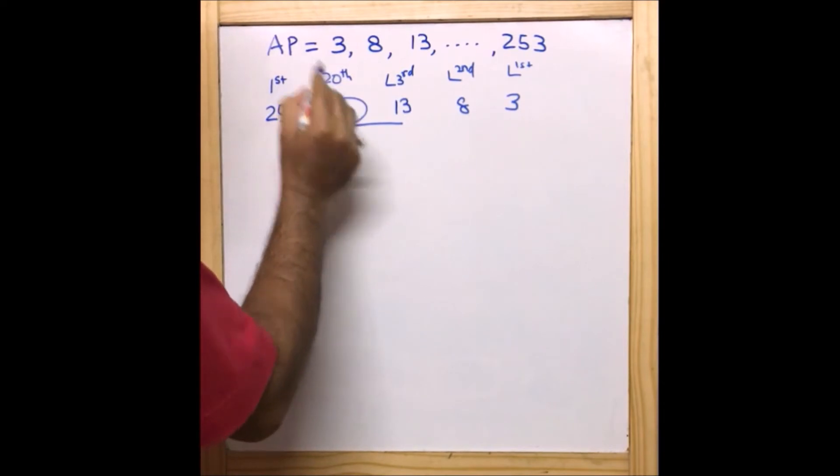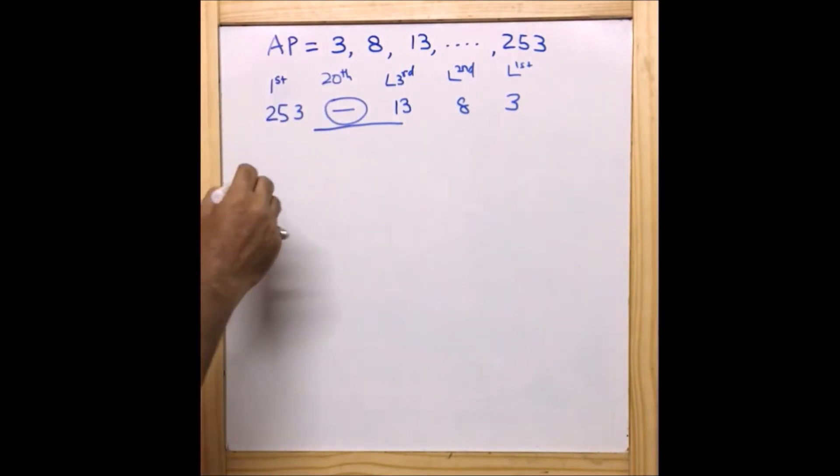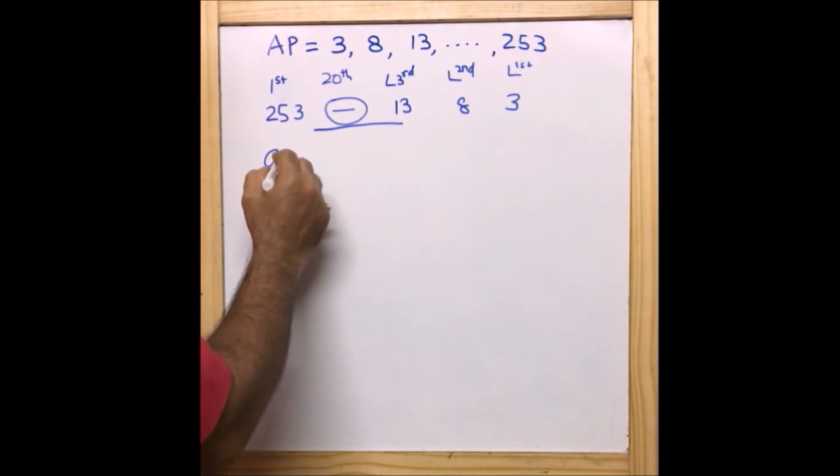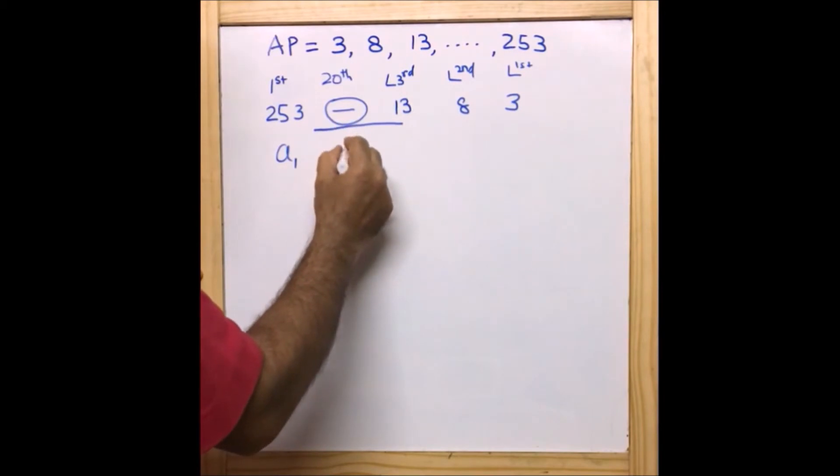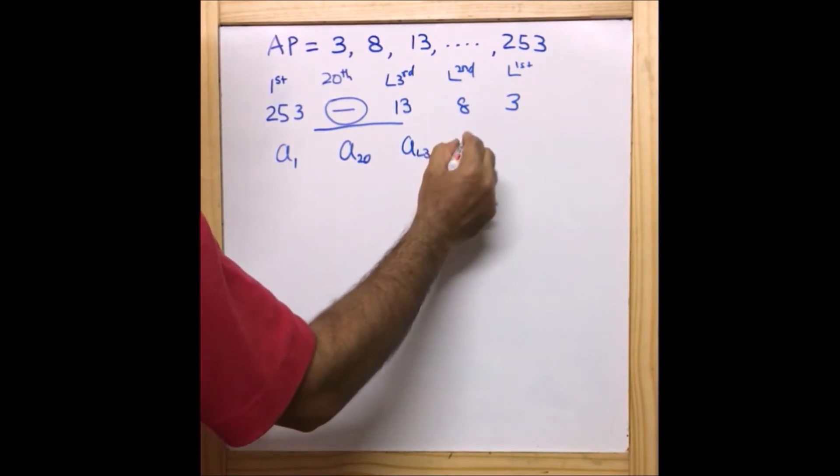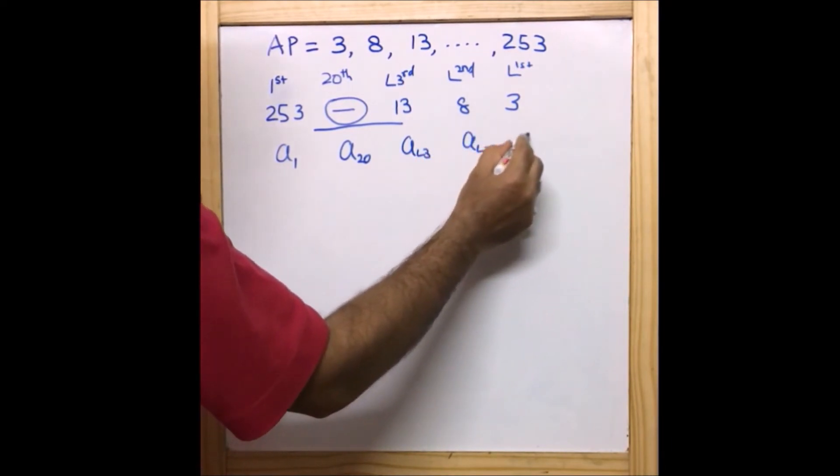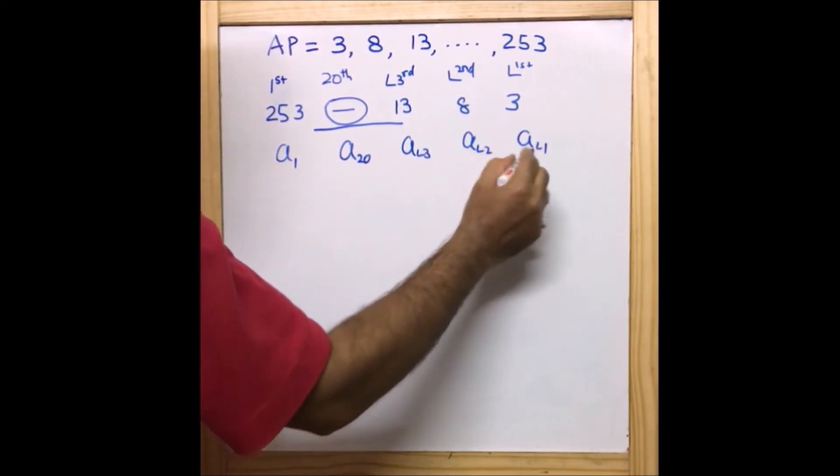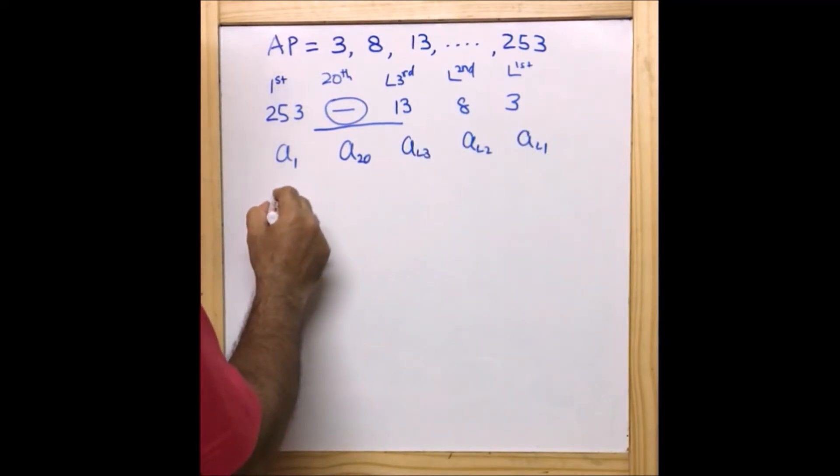We are going to use the formula a_n = a_1 + (n-1)d. Now this one is a_1 because this is our first term, and this one is a_20 which we are going to find out. This is a_l3, this is a_l2, and this is a_l1.